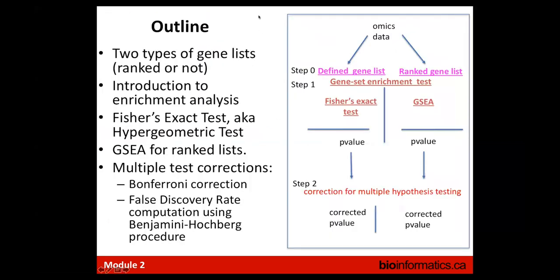This brings us to the outline of the enrichment analysis workflow. We have two different types of gene list: a defined gene list and a ranked gene list, and the statistical test differs accordingly. A defined gene list uses Fisher's exact test, and a ranked gene list uses a rank-based sum test included in the GSEA tool. Both give us a p-value for each tested pathway, assessing the probability that the pathway is enriched in our gene list by chance only. We then correct for multiple hypothesis testing using Bonferroni correction or the false discovery rate via the Benjamini-Hochberg method.